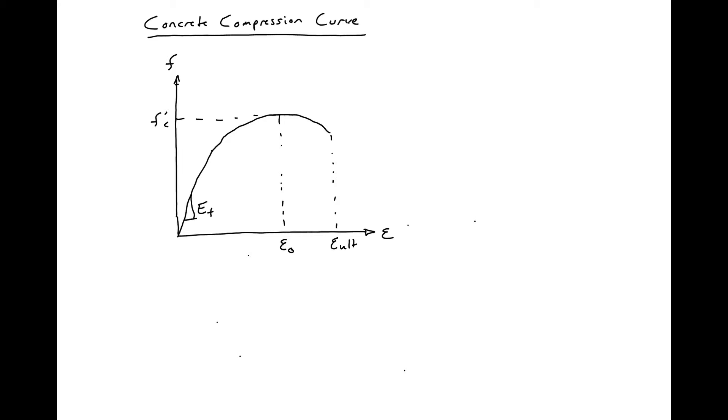Typically, we use the secant modulus for our initial slope, which we'll typically take as 57,000 times the square root of f prime c. And this is where f prime c is in psi.